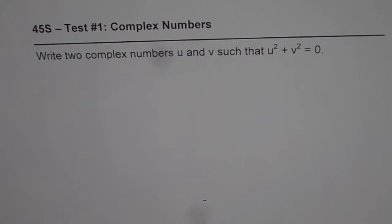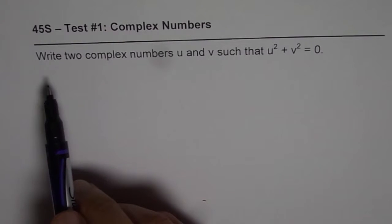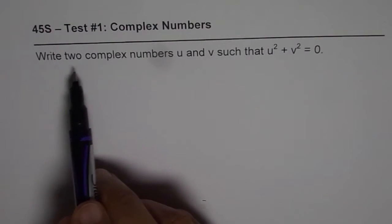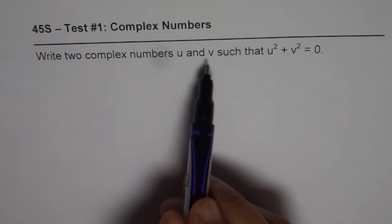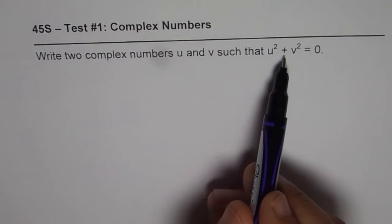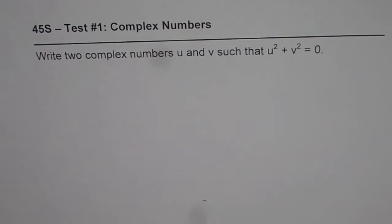I am Anil Kumar and here is a very interesting question on complex numbers. The question is, write two complex numbers u and v such that u² + v² = 0.